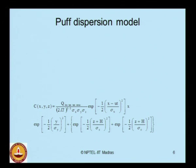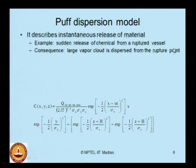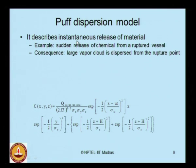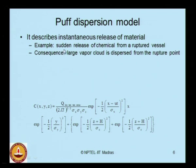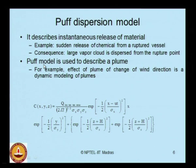There is an alternative model in the literature called the puff dispersion model. The puff dispersion model is generally used for instantaneous release of material, whereas the plume dispersion model is used for continuous release. For example, a sudden release of chemical from a ruptured vessel can produce a large vapor cloud dispersed from the rupture point instantaneously. The puff model is also used to describe dynamic modeling of plumes under changing wind direction.